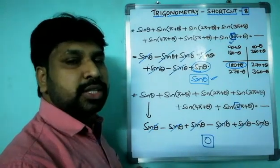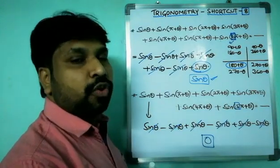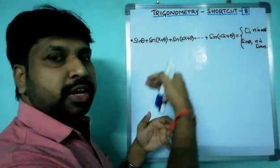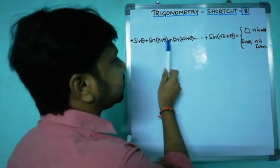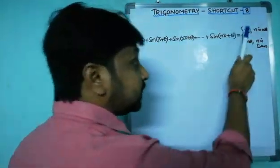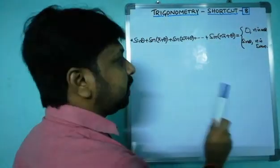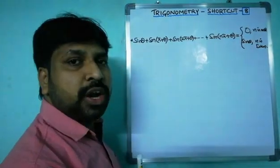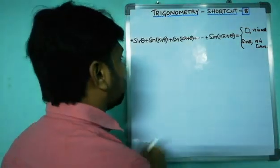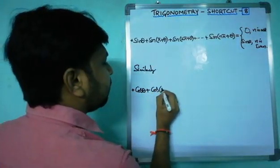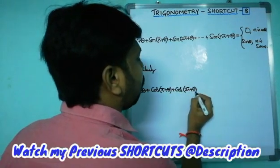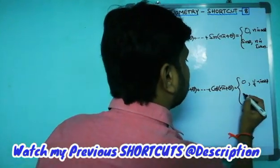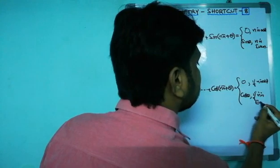By observing these two concepts, we can write two formulas. Formula one: sin theta plus sin(pi plus theta) plus sin(2pi plus theta) plus ... plus sin(n·pi plus theta) equals zero when n is odd, and equals sin theta when n is even. Similarly, the same formula applies for cosine: cos theta plus cos(pi plus theta) plus cos(2pi plus theta) plus ... plus cos(n·pi plus theta) equals zero if n is odd, and equals cos theta if n is even.